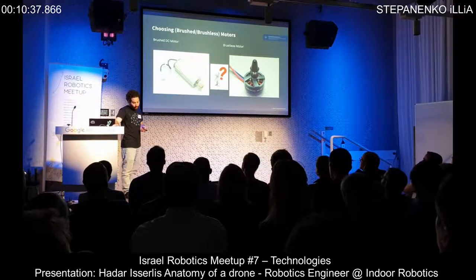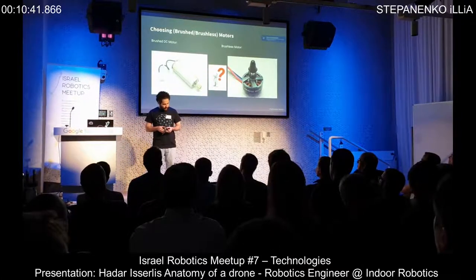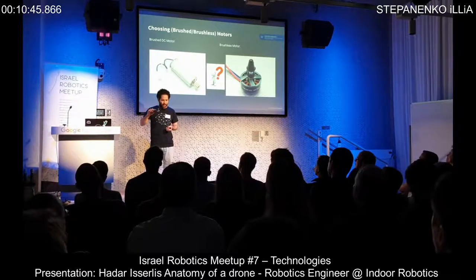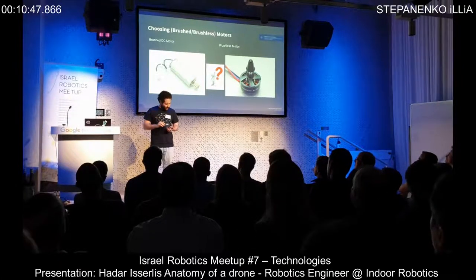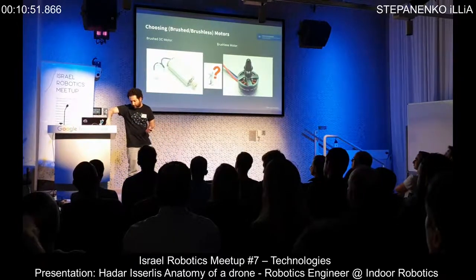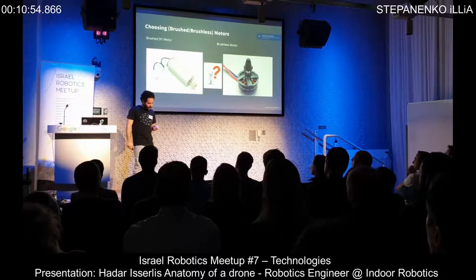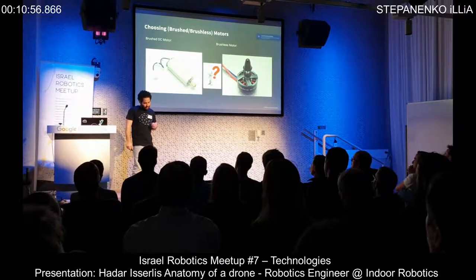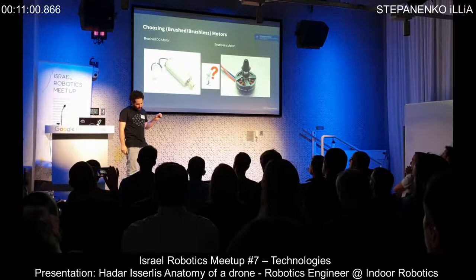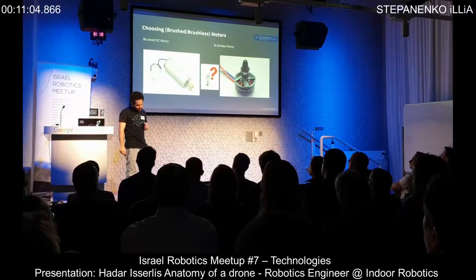Generally we have two types of motors: brushed motors and brushless motors. Brushed motors are generally used in small toys or small helicopters — they are less efficient but lighter, and the driving is a bit different. Brushless is the opposite — more efficient and used in larger builds.